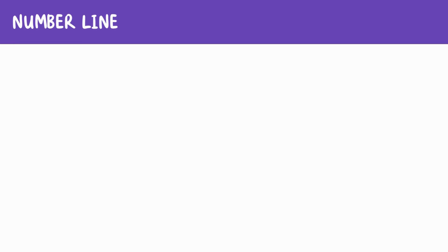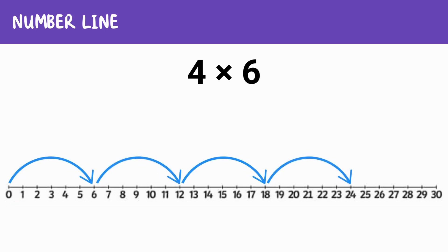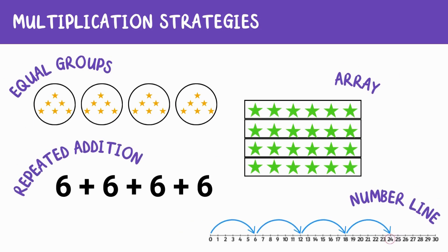Finally, let's use the number line strategy. We start at zero and make four jumps of six spaces: one, two, three, four hops. After four jumps of six, we land on 24. So once again, four times six equals 24. As you can see, whether we use arrays, equal groups, repeated addition, or a number line, we always get the same answer.